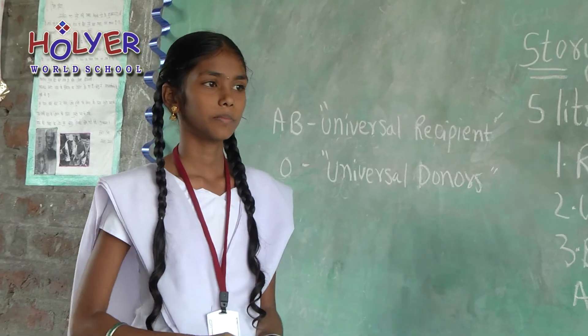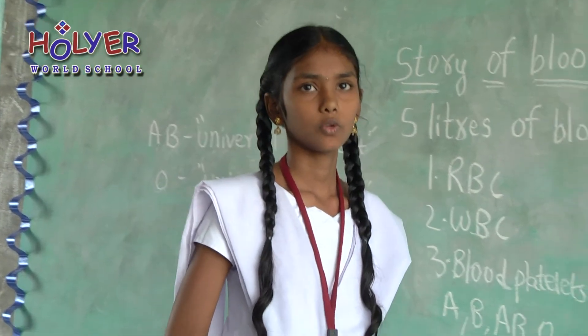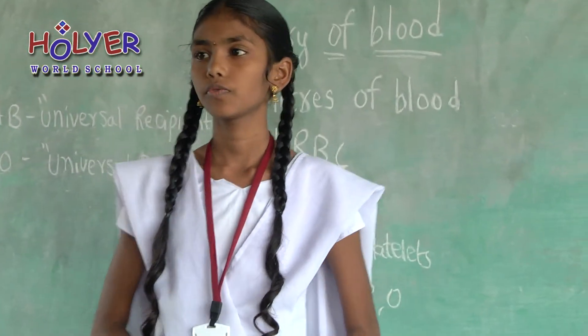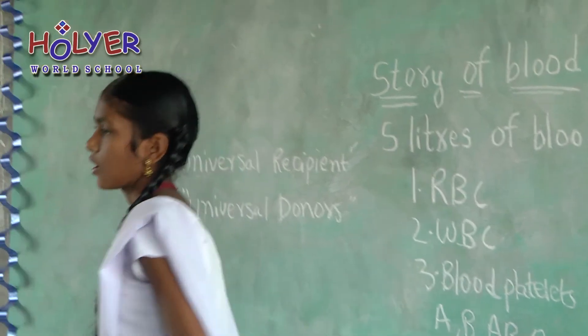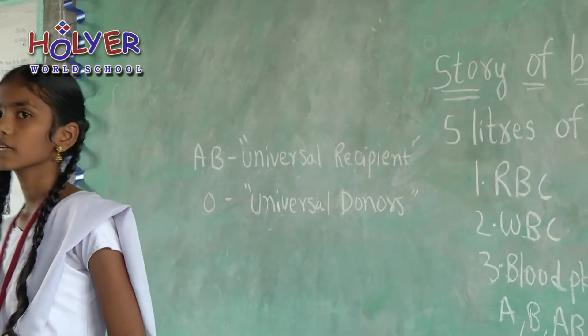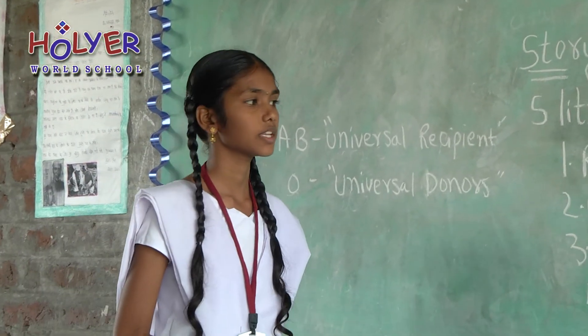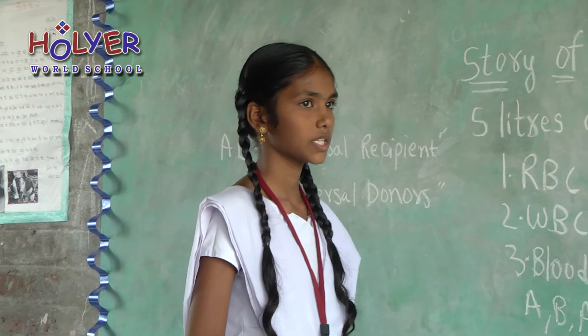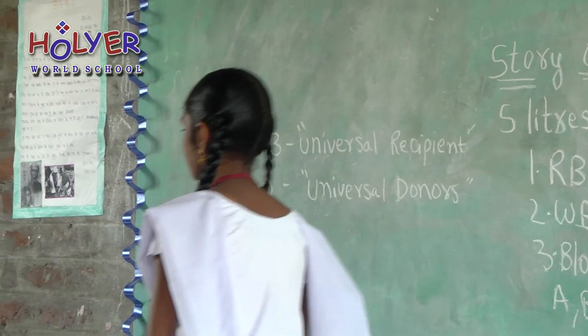Normally human beings have about 7 to 8 percent blood. All human beings have these red components. There are no population or regional differences. Thank you.